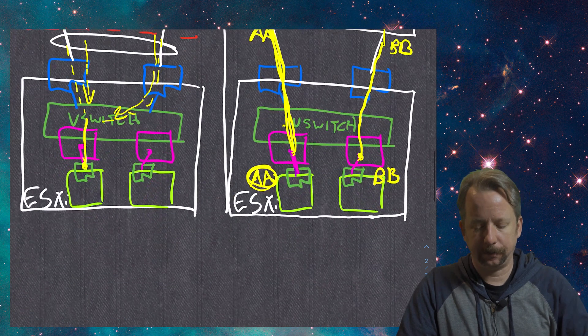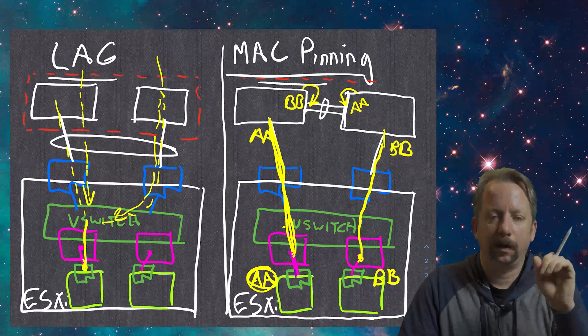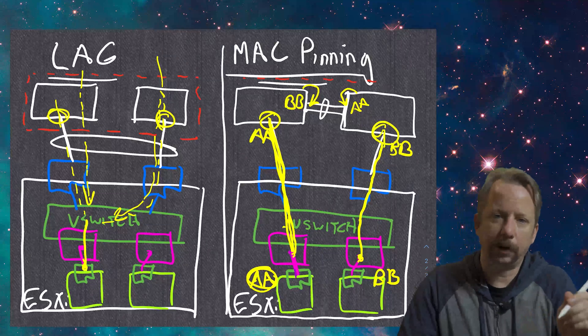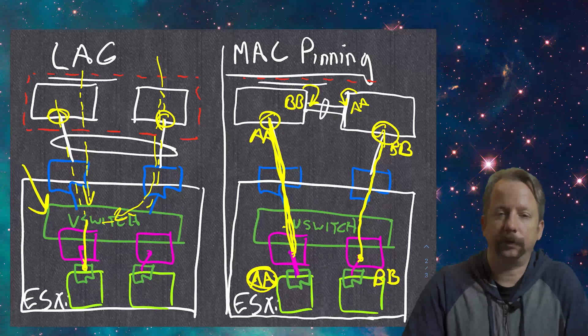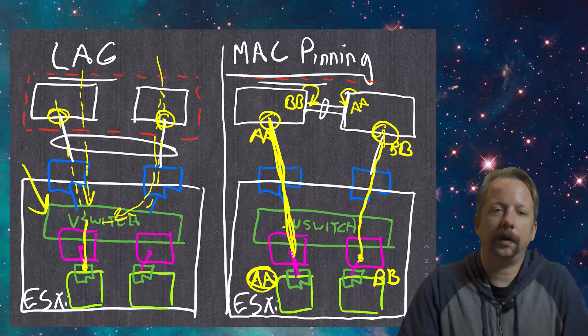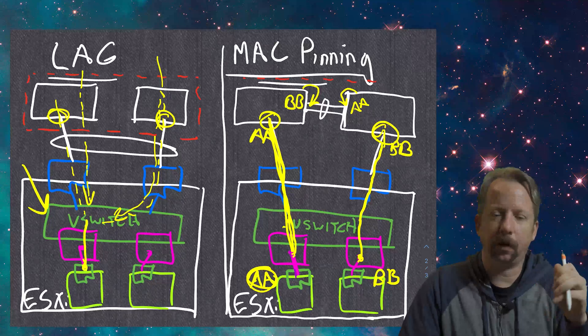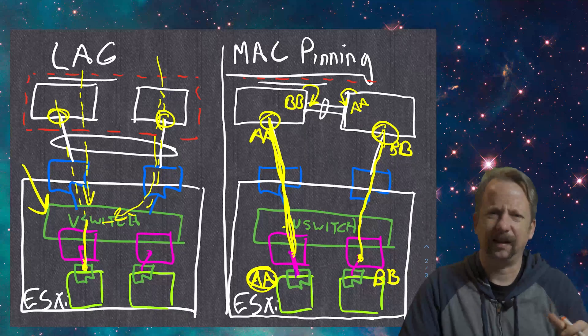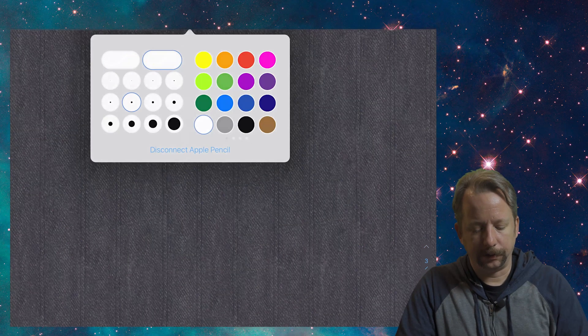On both of these, it's safe to turn on port fast so that you can have these interfaces go into forwarding mode immediately. These vSwitches actually don't do any spanning tree. They basically look like a single host that just happens to have a lot of MAC addresses on the other end. So we can treat it like an edge port. Spanning tree or port type edge works fine, or trunk type edge works fine.